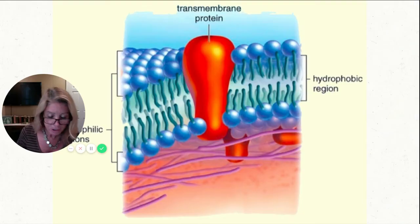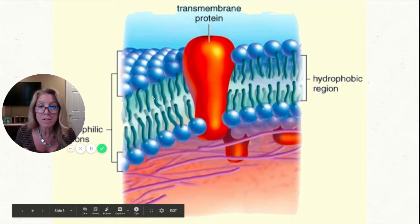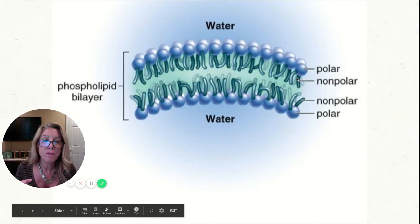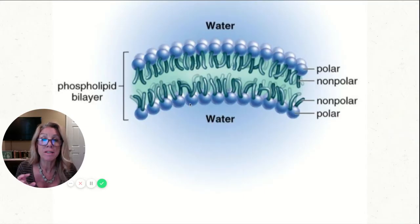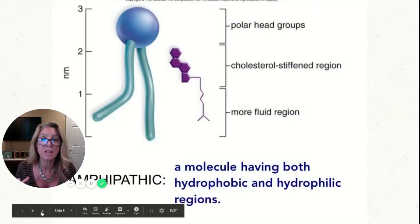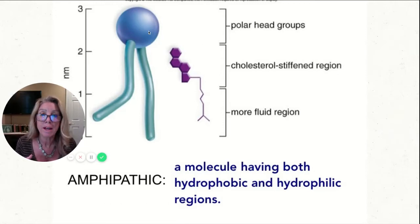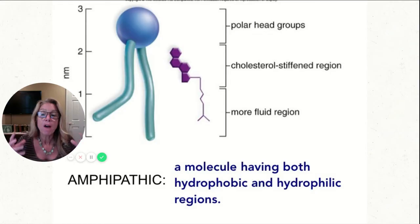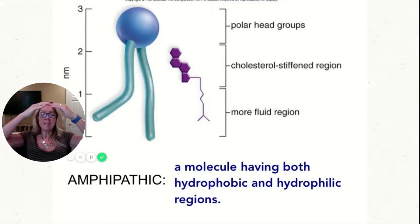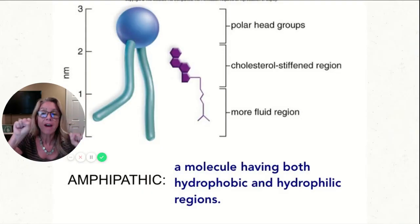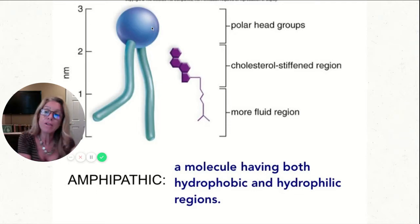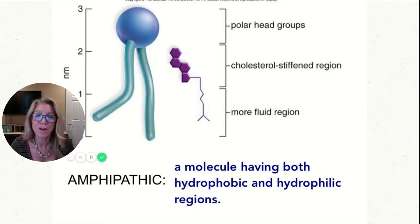On your notes, look at phospholipids. One of the first things I want you to notice is that they are amphipathic, which means they have an area that is hydrophobic and non-polar, and then an area that is hydrophilic. So it has different properties on either end. When we zoom in, we can see the polar head and then these long fatty acid chains, which are the hydrophobic parts. Amphipathic means a molecule having both hydrophobic and hydrophilic regions.